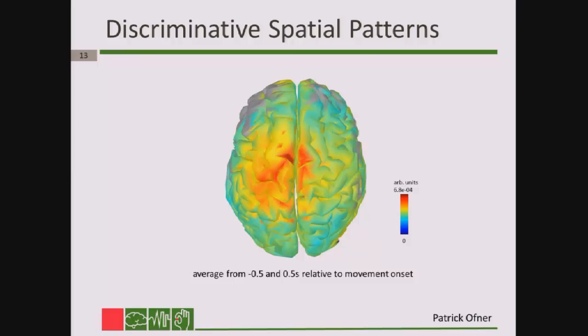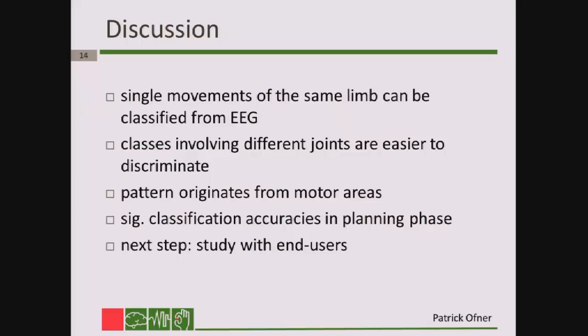The next point is the classifier pattern. What we see here is the median over all 15 subjects. We can see that the supplementary motor area and the contralateral motor cortex contain the discriminative information as used by the LDA classifier.